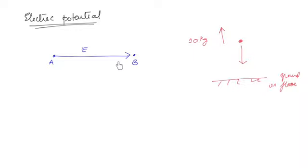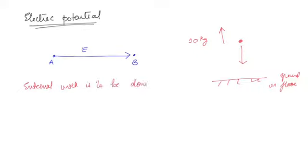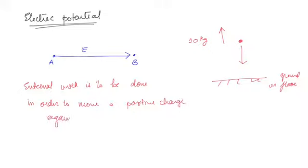In the same way, with an electric field line, you have electrostatic force instead of gravitational force, but the same principle applies. External work must be done in order to move a positive charge against the direction of the electric field.